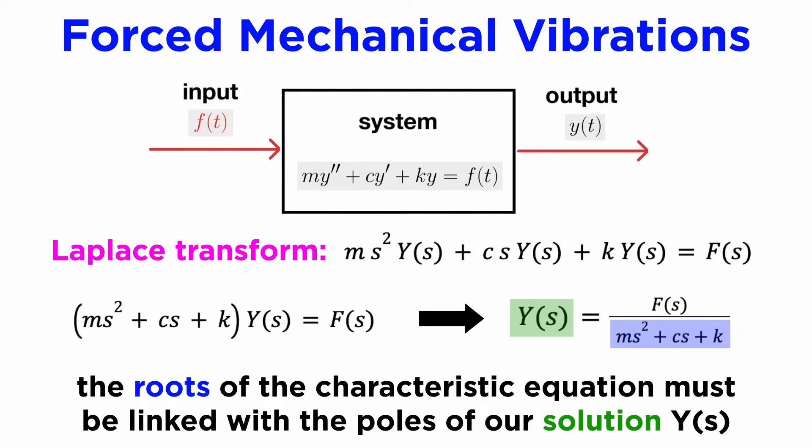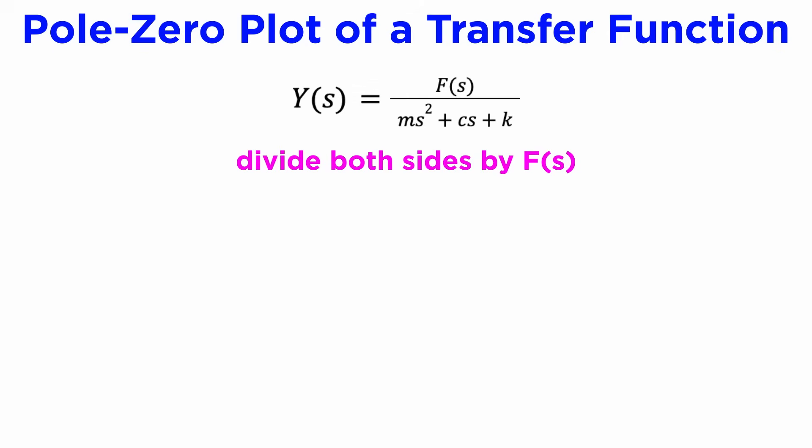The roots of the characteristic equation, which we know determine the form of our general solution, must therefore be closely linked with the poles of our solution Y(s). To study the intrinsic behavior of our system, let's first divide both sides by F(s).